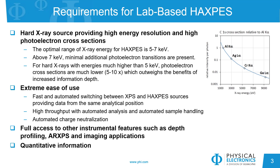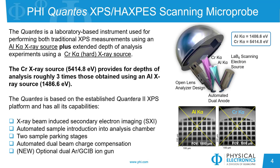Choosing the best photon source for HAXPES is a balance of information depth, photoelectron cross-section, and additional transitions gained. 5 to 7 keV has been found to be an optimal choice. Based on the established QUANTERA 2 XPS platform, PHI and ULVAC-PHI have developed the QUANTES, a lab-based XPS/HAXPES instrument which contains two X-ray sources: monochromatic aluminum for traditional XPS and monochromatic chromium for HAXPES analysis.